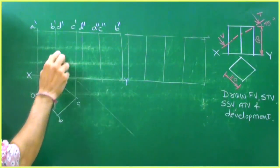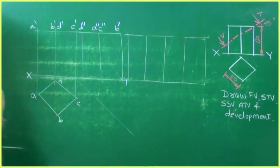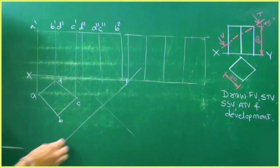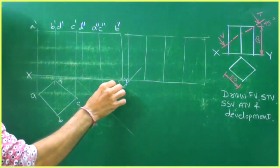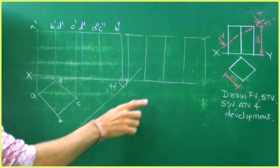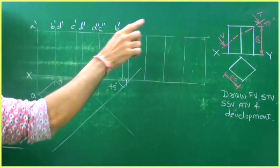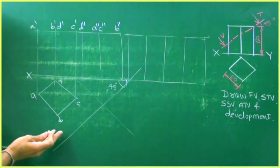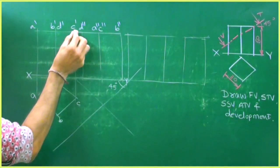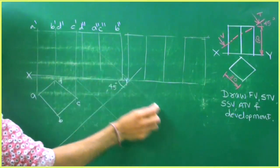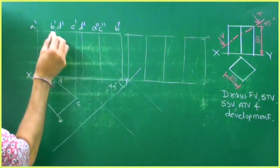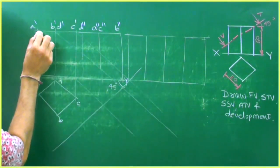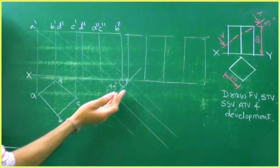Now for the XY line, if I want to draw the auxiliary view, I draw at 45 degrees. The cutting plane line is at 45 degrees, so we draw it at 45 degrees. From C dash we draw 45 degrees, from B dash and G dash we draw 45 degrees, and from A dash we draw 45 degrees.